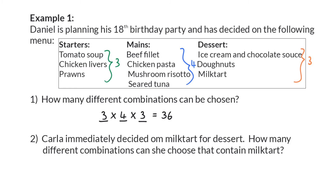Karla immediately decided on milk tart for dessert. How many different combinations can she choose from that contain milk tart? Because Karla already decided that her dessert will be milk tart, she only has one option for desserts. When using the counting principle, we still have our three tasks and multiply their options. Our starters still have three options, we have four main options to choose from, and her one dessert option. This gives her 12 different combinations to choose from.